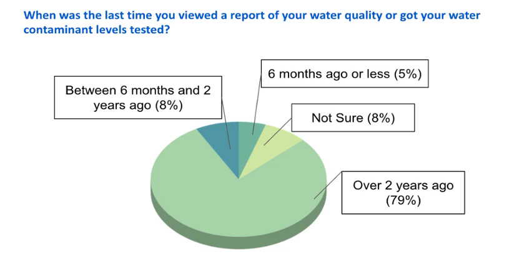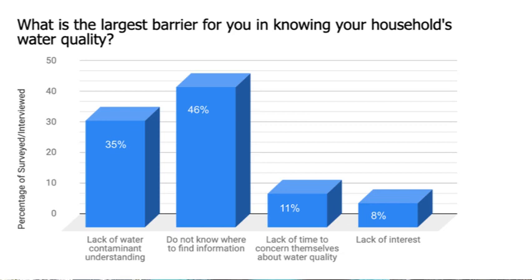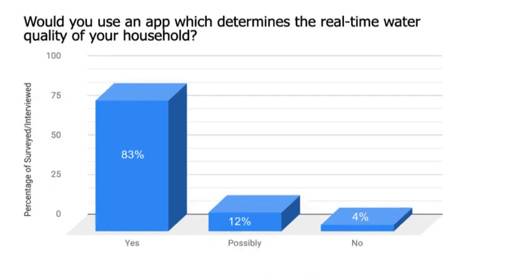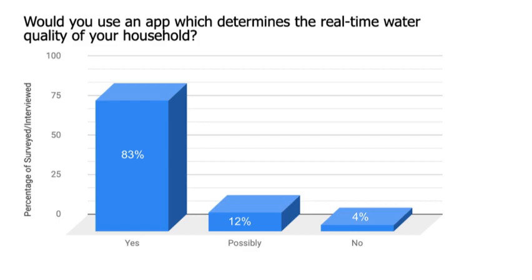To adapt MAJI to our customers' needs and gain a greater understanding of water quality awareness, we surveyed and interviewed 300 potential users from four age groups, five states, and seven countries. Subjects were asked questions assessing their current knowledge of water quality and opinions about the app's features. It was found that only 5% were actually informed about their water quality in the last six months, meaning there is a considerable market for MAJI.